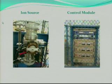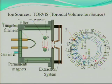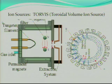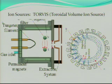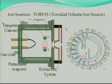These two pictures are the ion source and the control module. For proton irradiation, we use a negative hydrogen ion. The hydrogen molecule enters the chamber and collides with high-energy electrons. The aperture on the right side will extract the negative hydrogen ion.